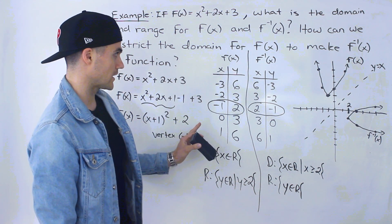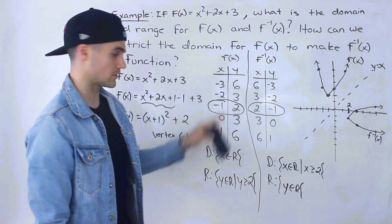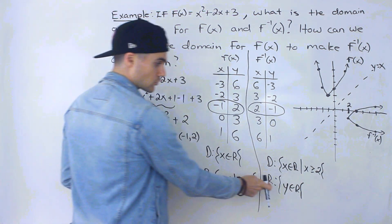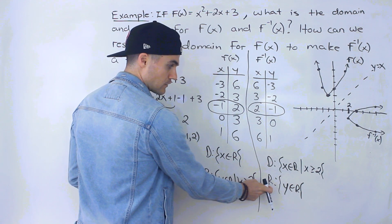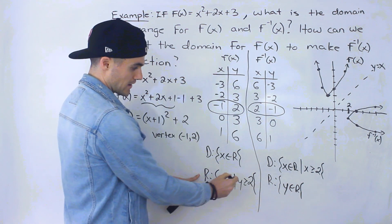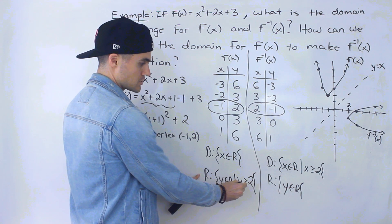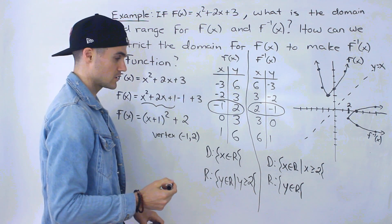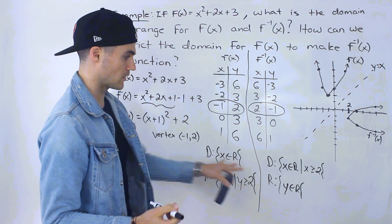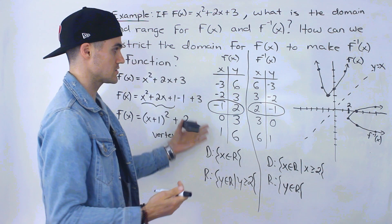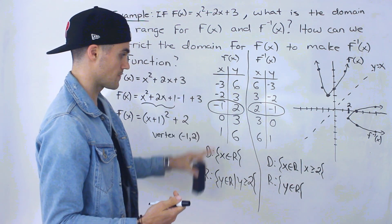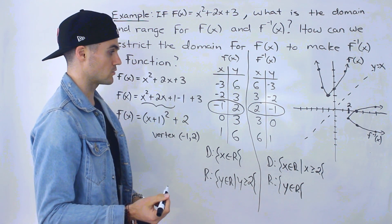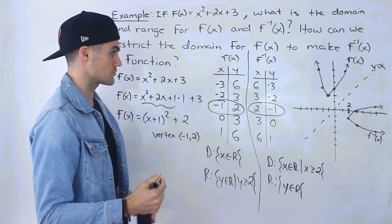Notice how the domain and range of the function and inverse relate. The domain of the function is x ∈ ℝ, which becomes the range of the inverse. The range of the function is y ≥ 2, which becomes the domain of the inverse (x ≥ 2). When we switch x and y values, we also switch the domain and range.